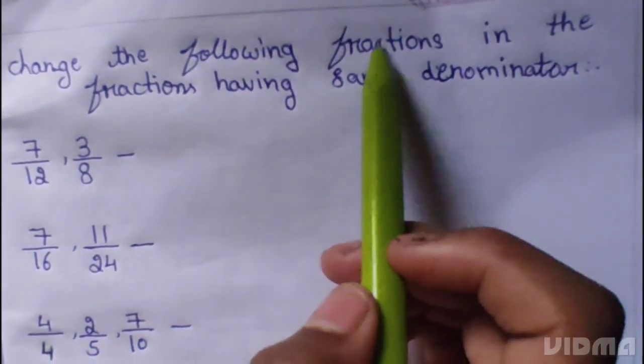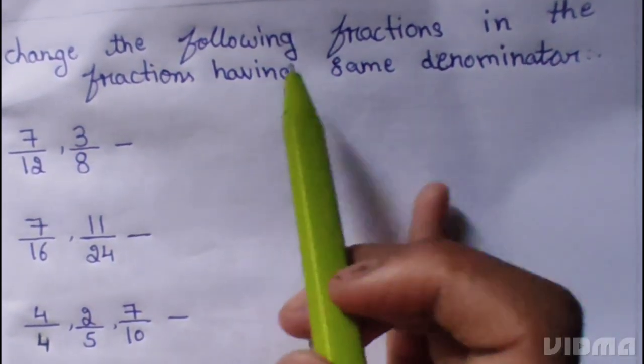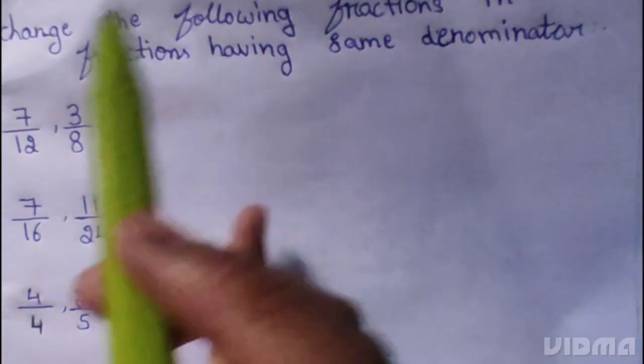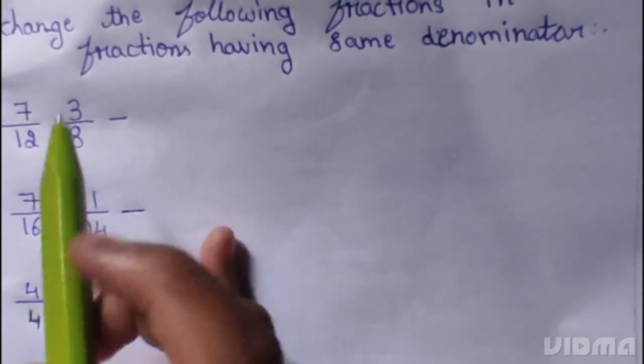Change the following fractions in the fractions having same denominator. 7 by 12, 3 by 8.